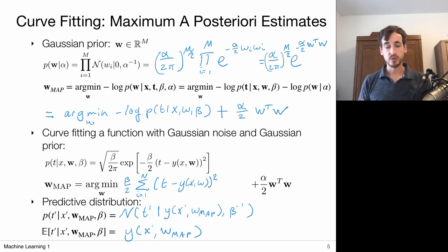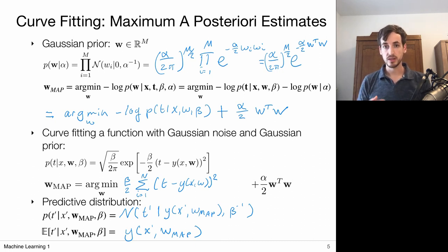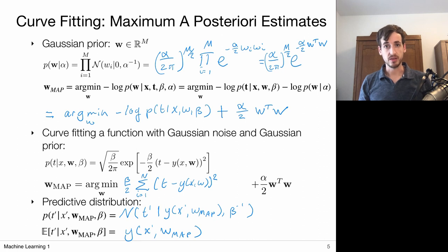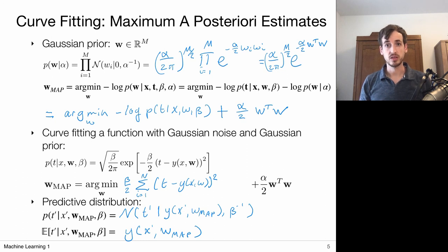Both the maximum likelihood approach and the maximum a posteriori approach provide weights for constructing predictive distributions. In the maximum likelihood approach the estimates come from solving a least squares problem, while in the maximum a posteriori case the most probable weights come from a regularized least squares problem.